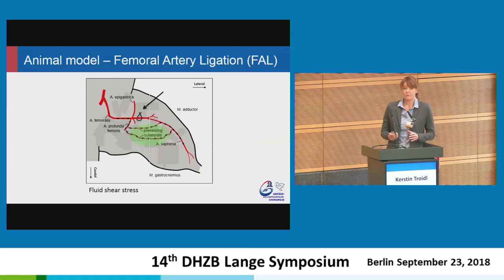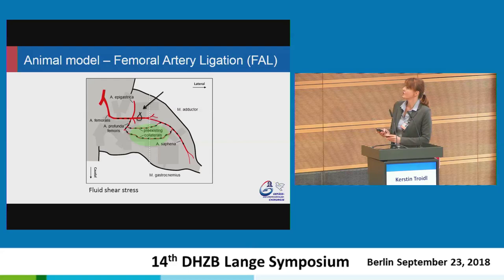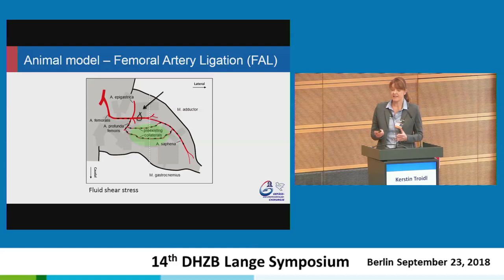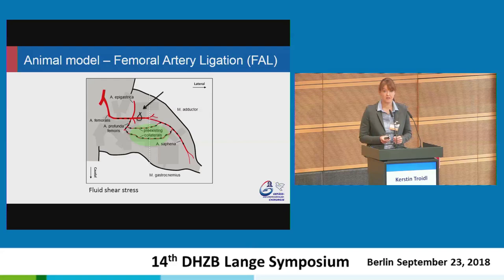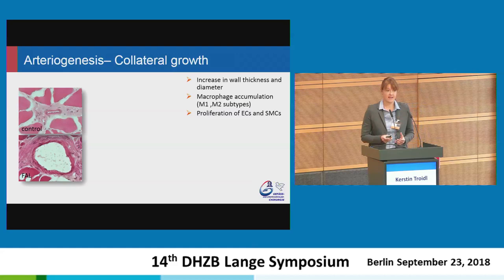When we model this in animal models, we ligate the femoral artery in the hind limb of an animal, distal to the feeder artery of the collateral arteries, so that the blood flow is directed into the collaterals. This increased blood flow leads to increased fluid shear stress, and these collaterals start to grow. When we harvest the adductor muscle containing the collateral arteries, we can see that these pre-existing collaterals increase in diameter, the lumen is increased, and also the vessel wall thickness is increased.